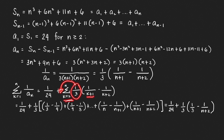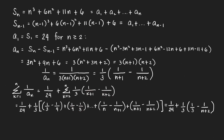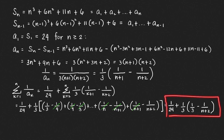When k equals 2 we get 1 over 3 minus 1 over 4; k equals 3 gives 1 over 4 minus 1 over 5; continuing until k equals n minus 1 gives 1 over n minus 1 over (n+1); and k equals n gives 1 over (n+1) minus 1 over (n+2). The intermediate terms cancel, leaving one-third times 1 over 3 minus 1 over (n+2).